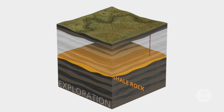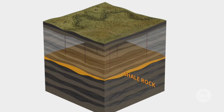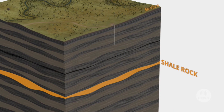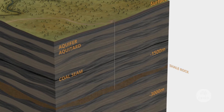Exploration involves drilling vertical and horizontal wells and hydraulically fracturing, or fracking, the shale rock to see if gas can be produced economically. When in the production phase, wells are drilled anywhere from 1,500 to 3,000 metres deep through various layers of rock to access the shale.